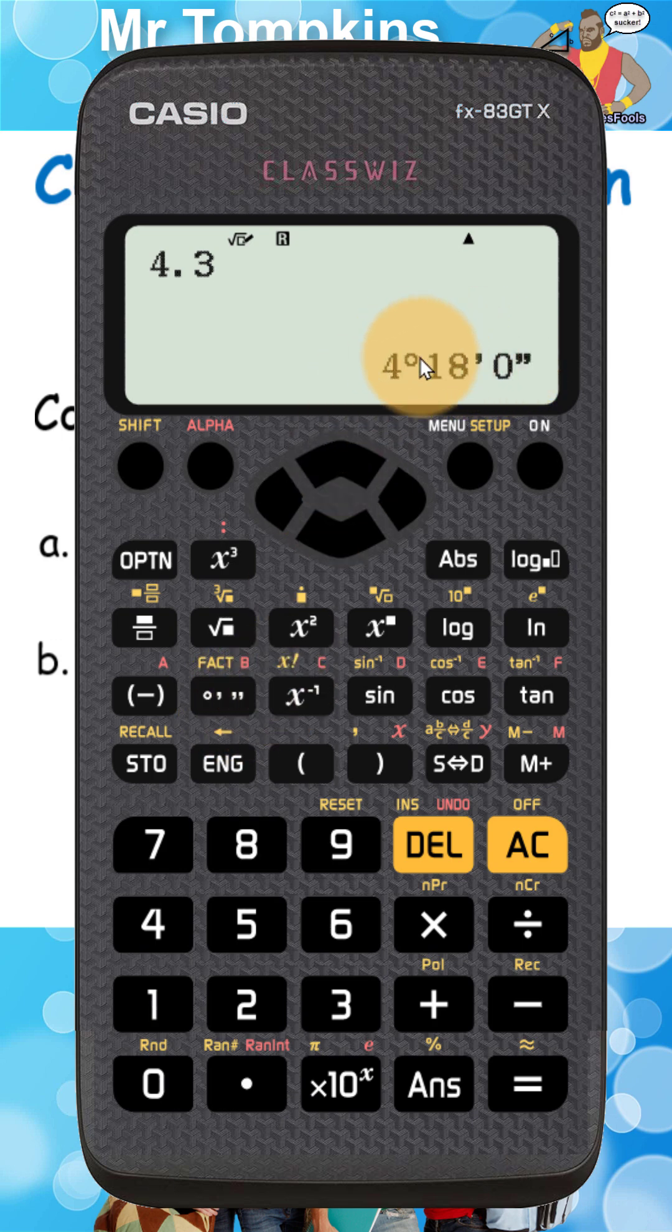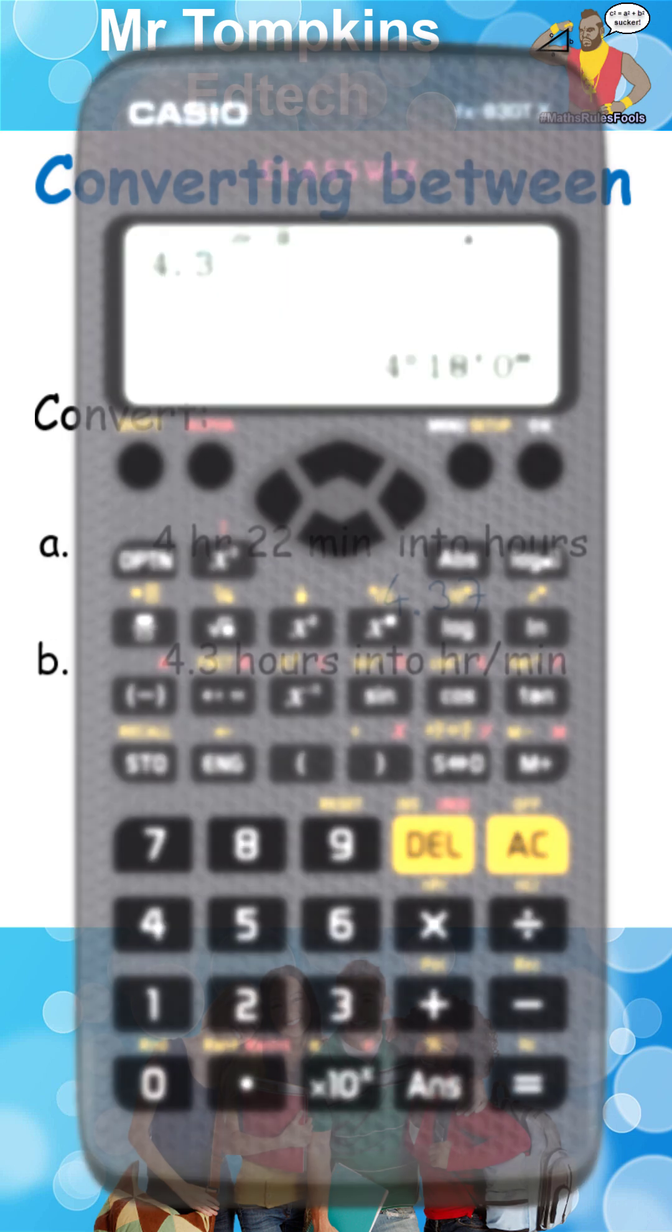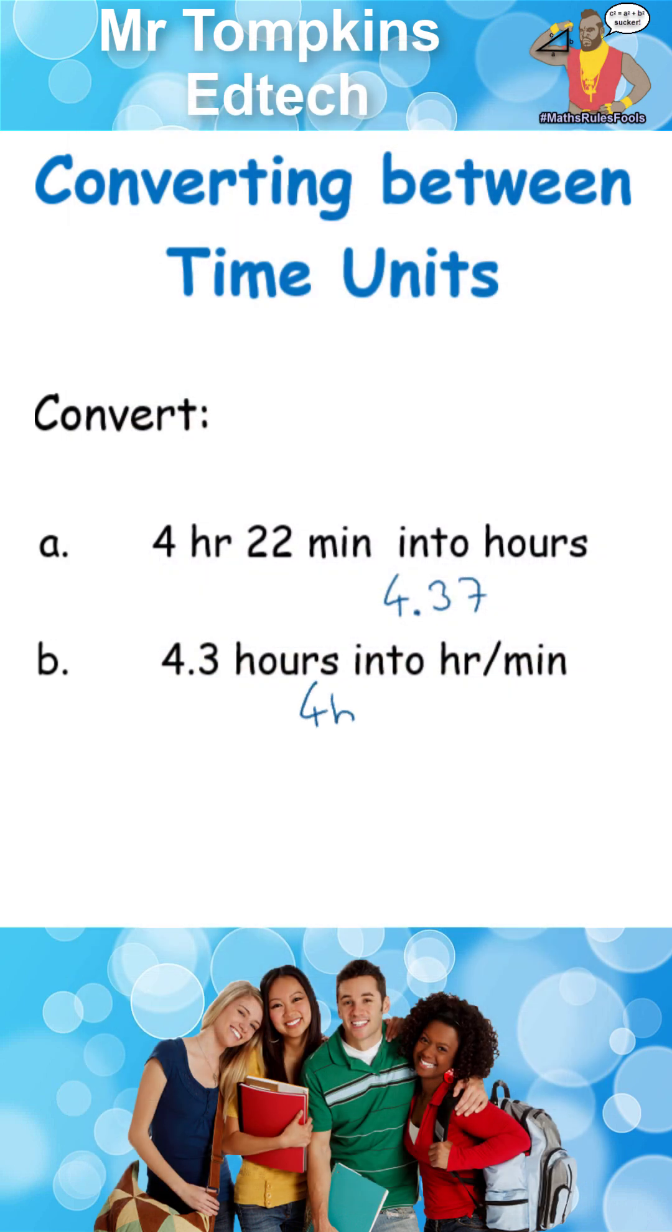You can see it just converts it straight away into 4 hours, 18 minutes and no seconds. So I'm going to write down 4 hours and 18 minutes. I don't feel the need to write the zero seconds.